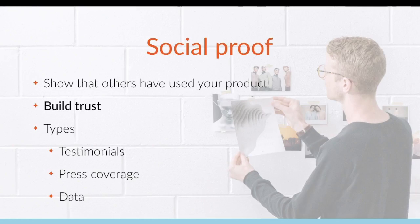Let's talk about creating social proof. Social proof shows others that have used your product, and the point is to build trust. In the digital age we don't get to meet our sellers or vendors — this is not a farmers market where you can see who's selling you your food. So instead it's great to include social proof that says: I'm a real person, this is not an internet scam.